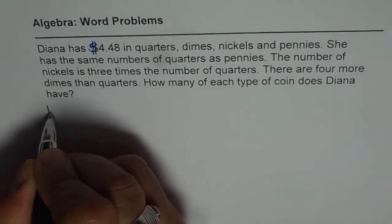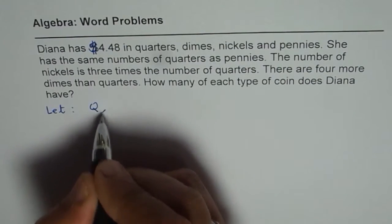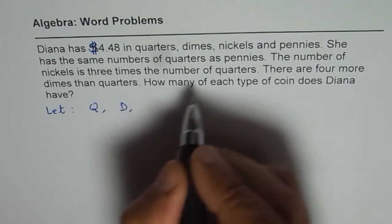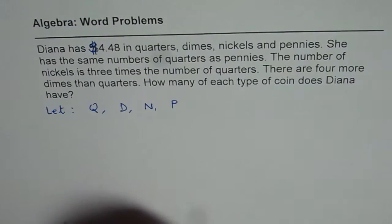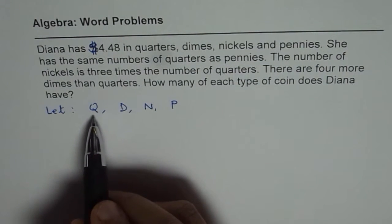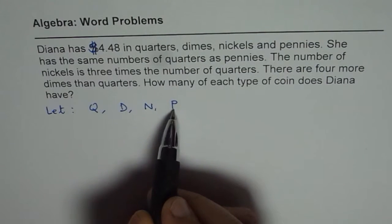So let's define our variables. Let's use Q for quarters, D for dimes, N for nickel and P for pennies. Now quarters is 25 cents, dime is 10 cents, nickel is 5 cents and pennies 1 cent.